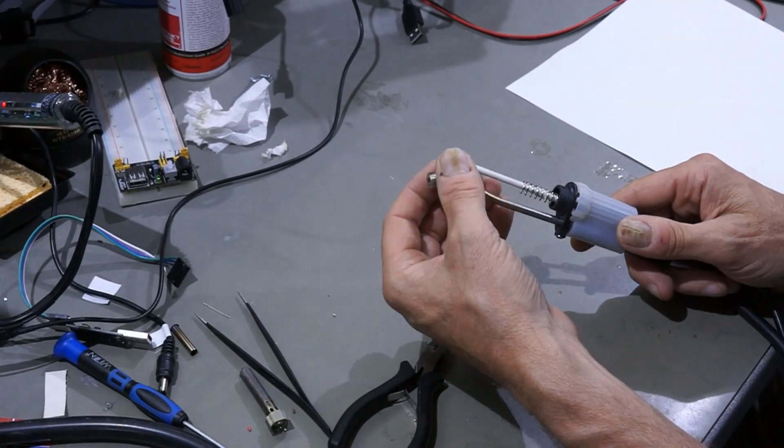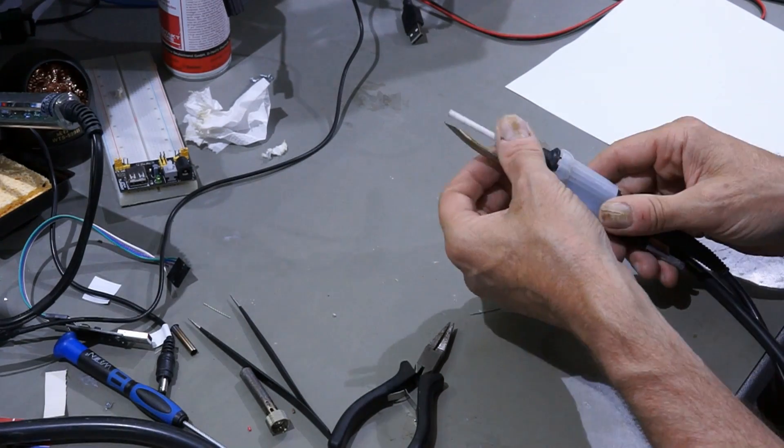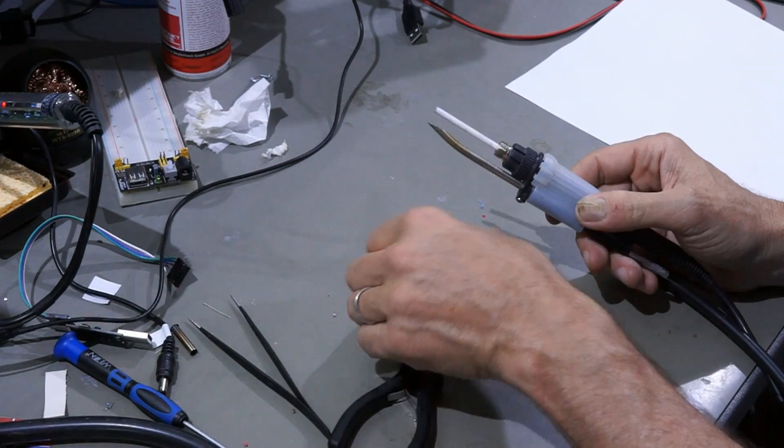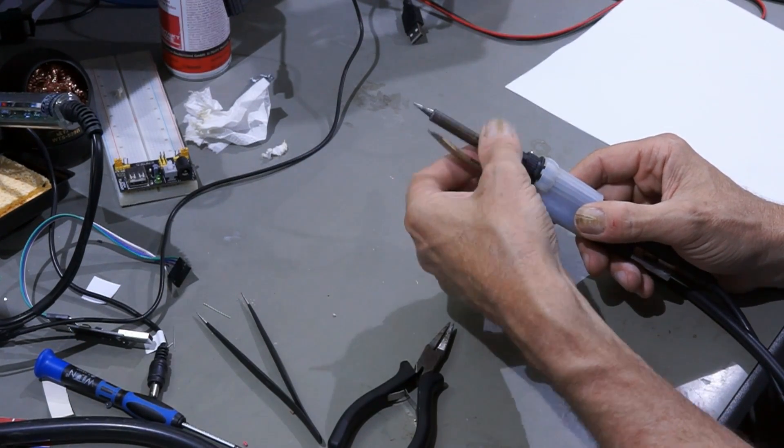If everything is connected and soldered, check the contacts again with the multimeter. If everything is okay, you can start to assemble the iron and use your repaired station as before.